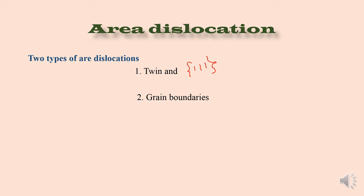Another type of area dislocation is grain boundary, which is something different. What is grain boundary? We want to grow single crystal. But suppose, due to some process problem, you have to grow a polycrystalline material.